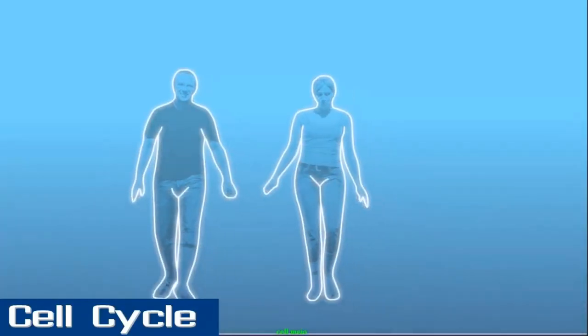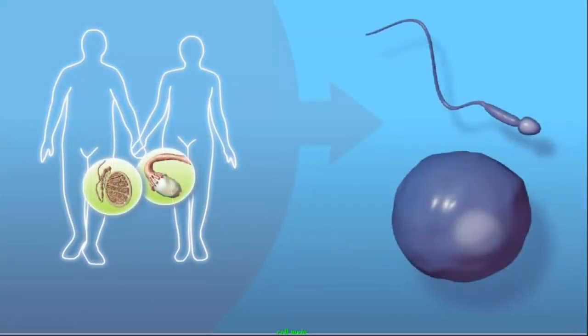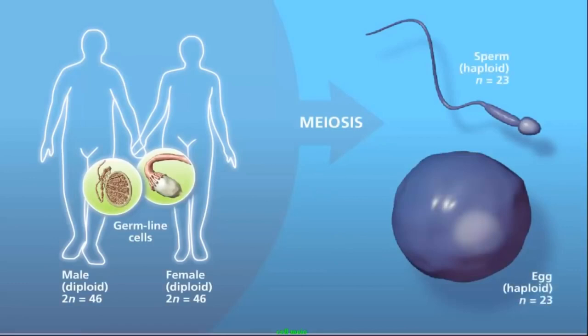Meiosis is the process by which haploid cells are produced from a diploid cell. For this to occur, the chromosomes must be correctly sorted and distributed in a manner to create genetically unique cells with half the number of chromosomes as the original cell.